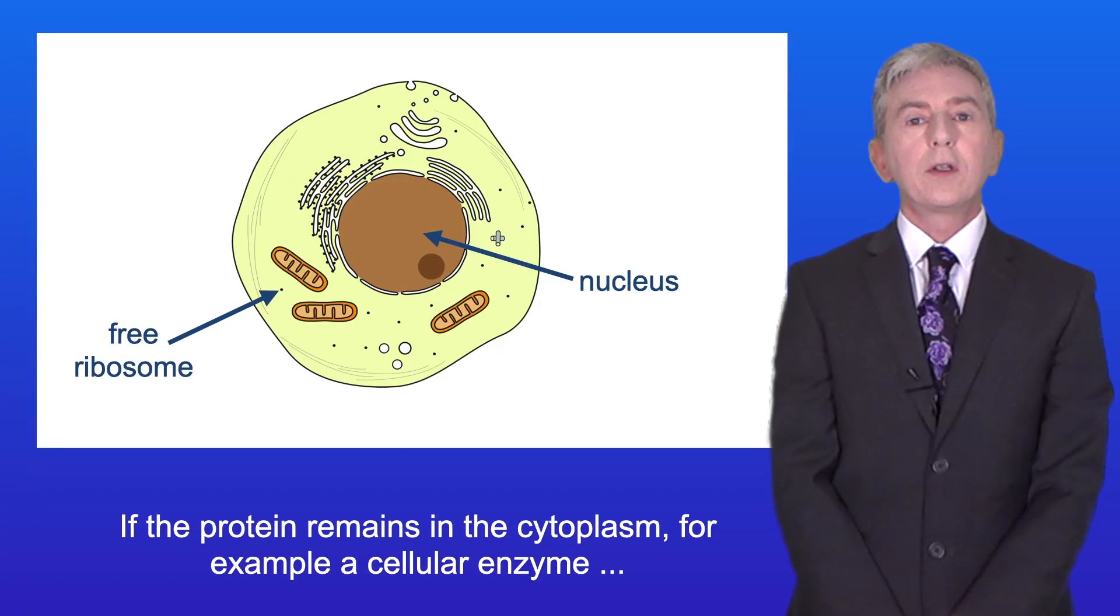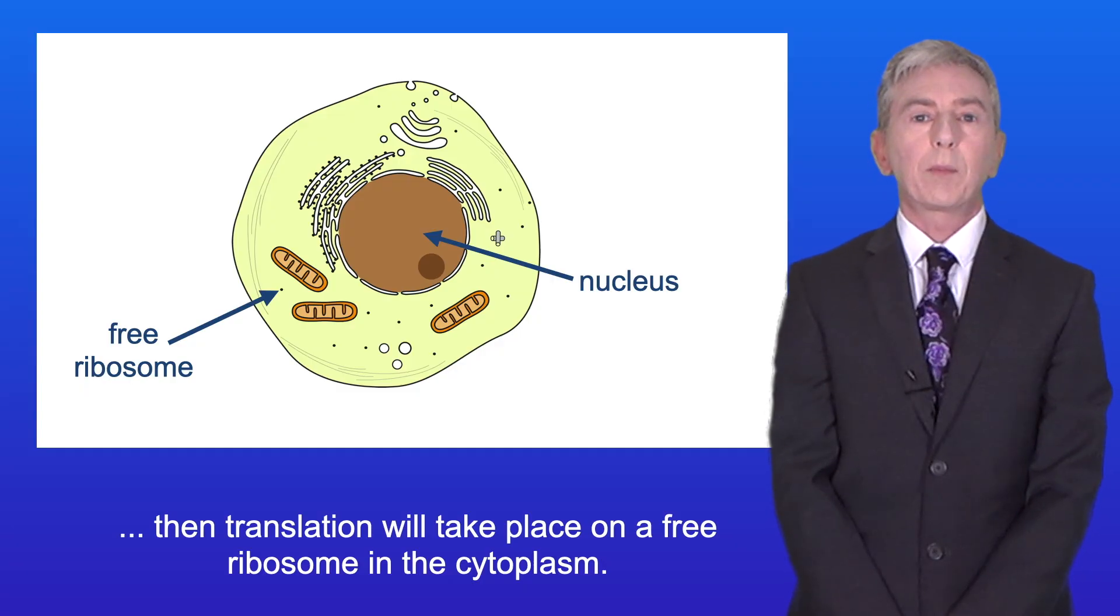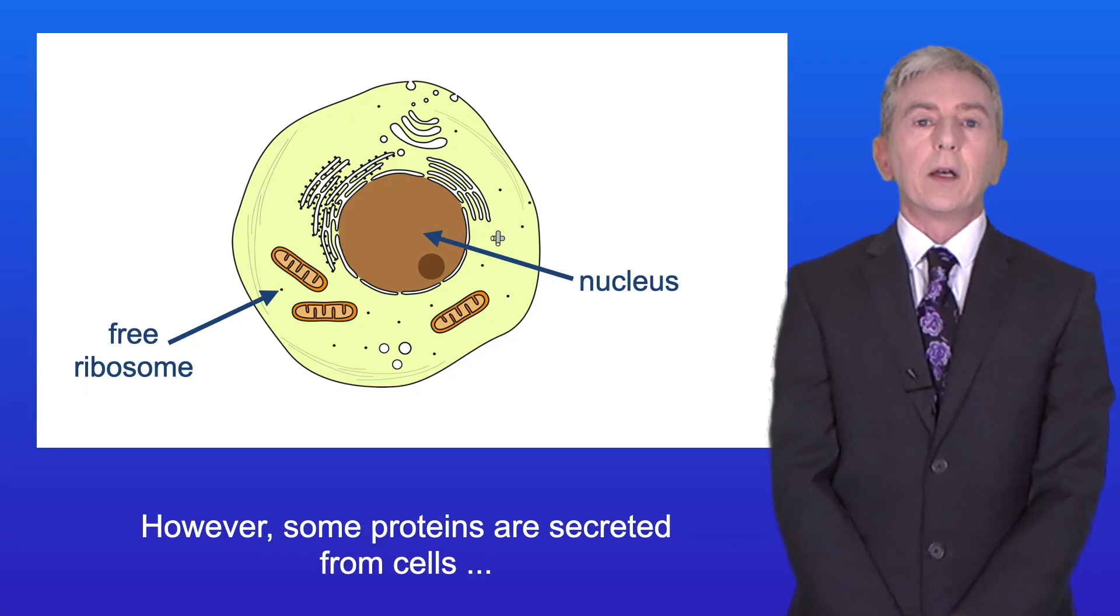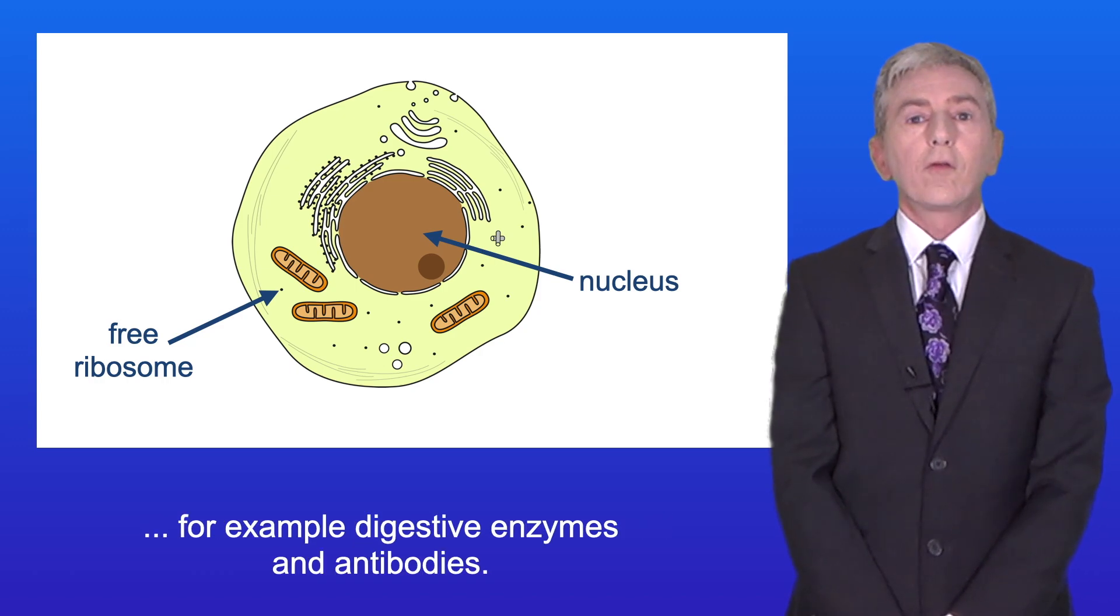If the protein remains in the cytoplasm, for example a cellular enzyme, then translation will take place on a free ribosome in the cytoplasm. However, some proteins are secreted from cells, for example digestive enzymes and antibodies.